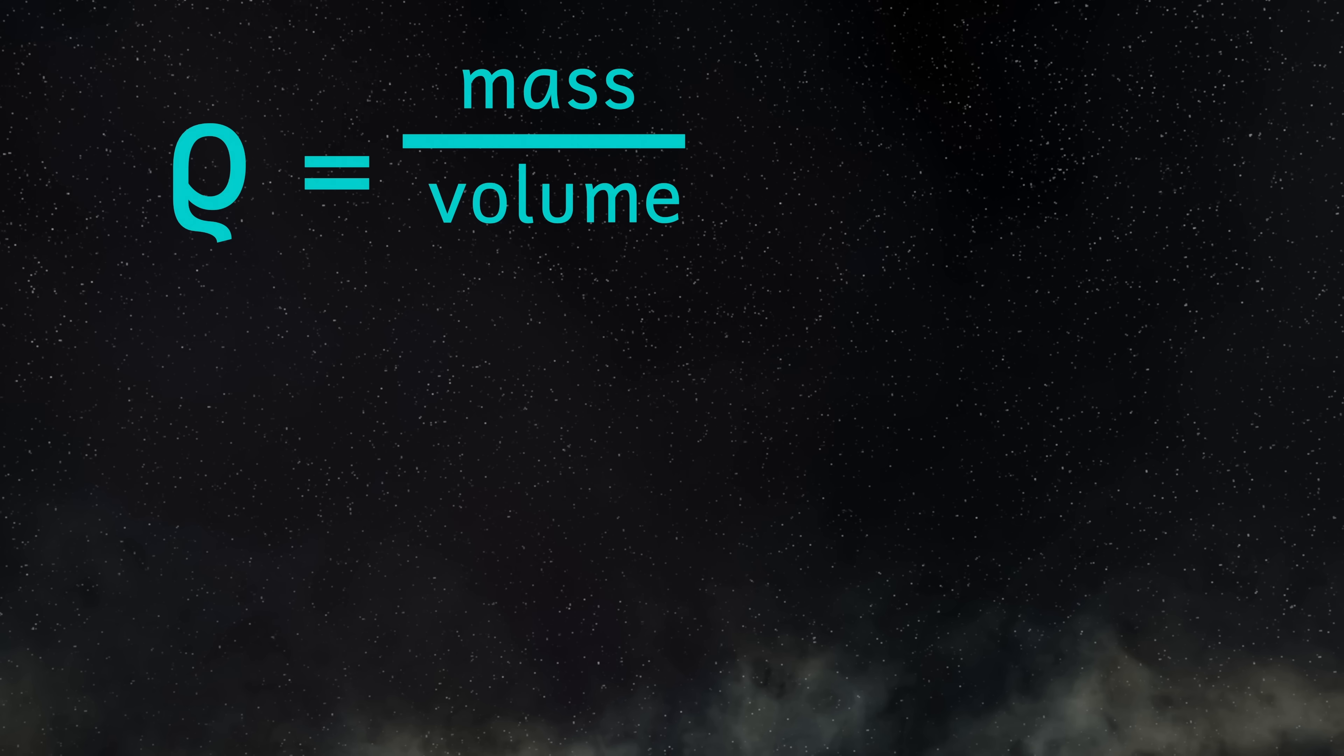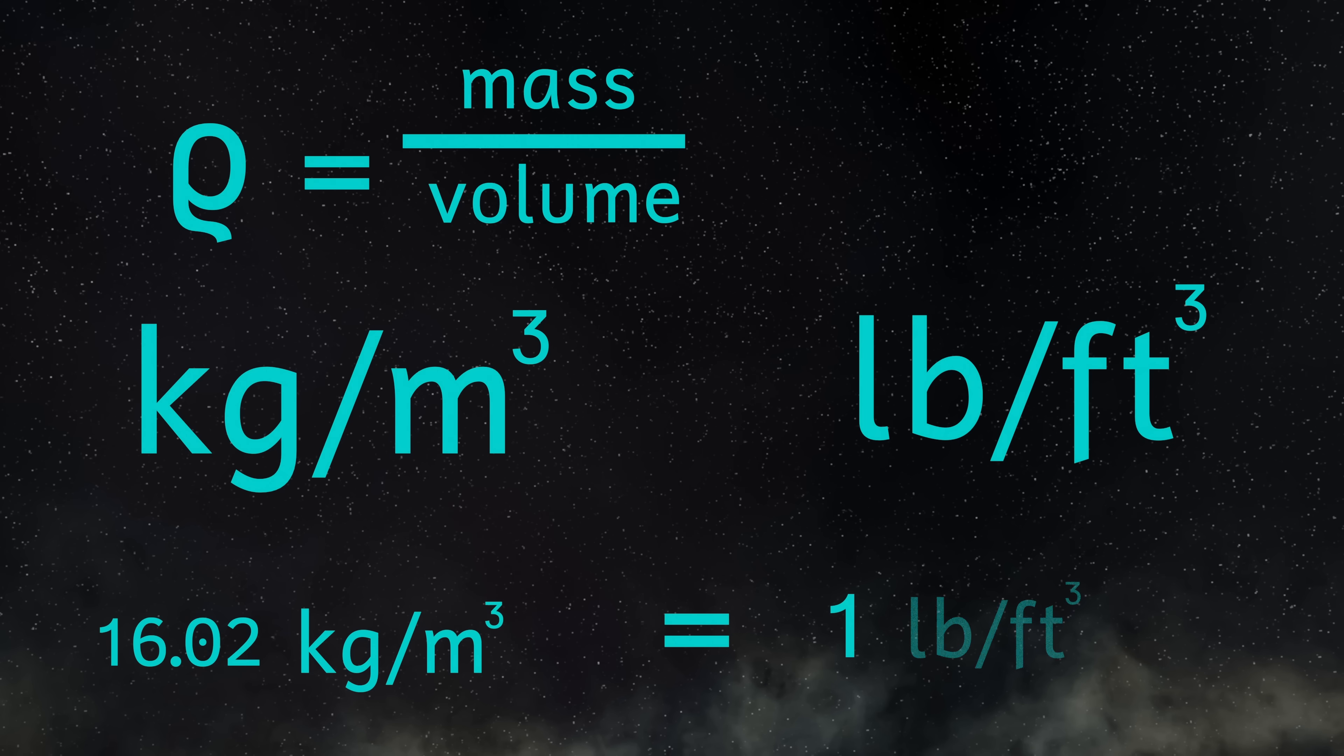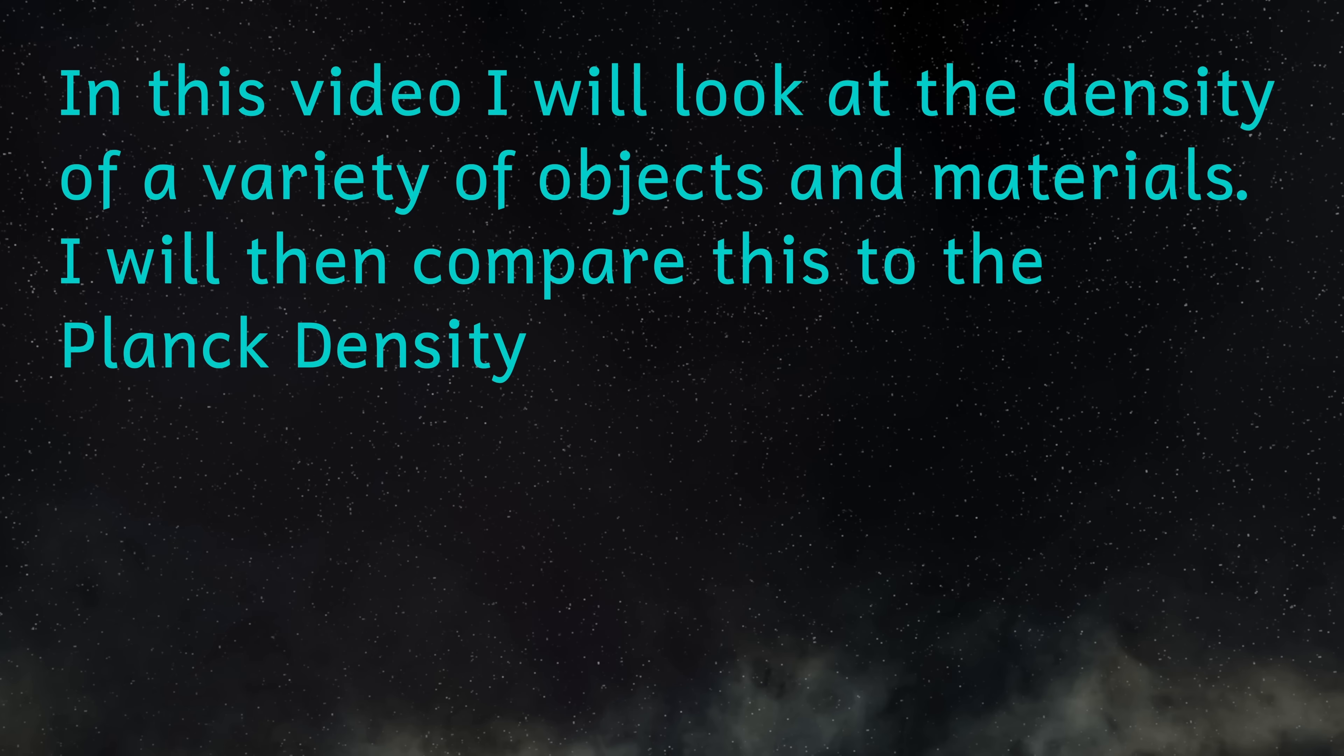The SI unit of density is kilograms per metre cubed. Even though I'm British and we tend to use a mixture of SI and imperial units seemingly at random, I'm not massively familiar with the imperial units. I've done a bit of googling and found that the US commonly uses pounds per cubic foot. I'll try and do as many conversions as I can, but once we get up to the really big numbers, the conversions are going to be irrelevant anyway.